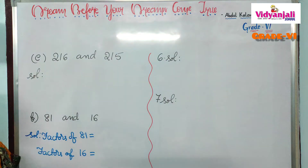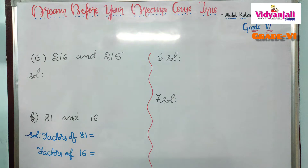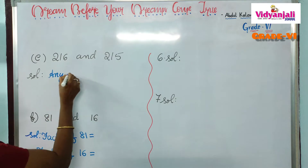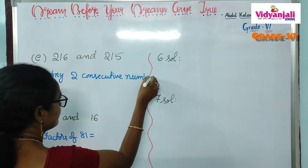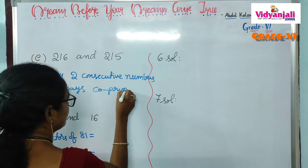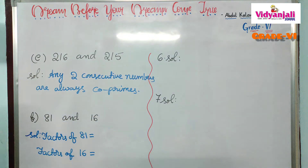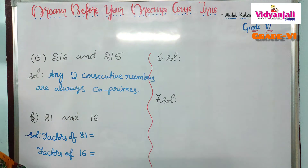Next pair: 216 and 215. These are consecutive numbers — two continuous numbers are called consecutive numbers. Any two consecutive numbers are always co-primes. So there is no need to find the factors. 216 and 215 are co-primes.